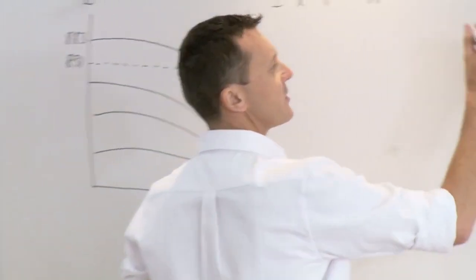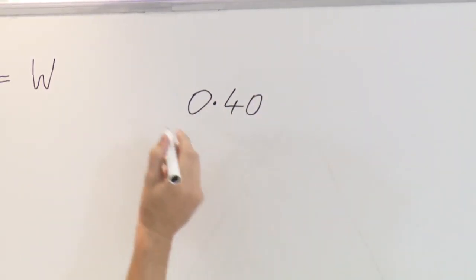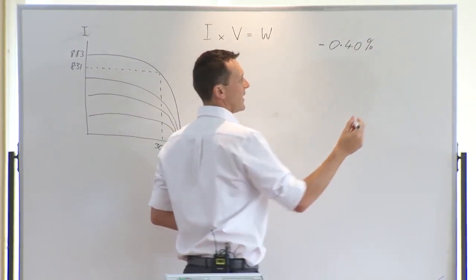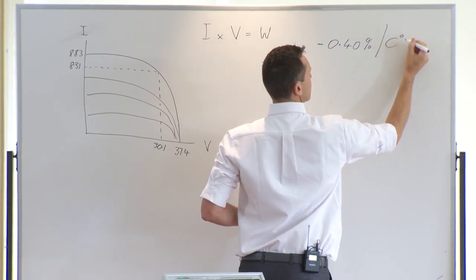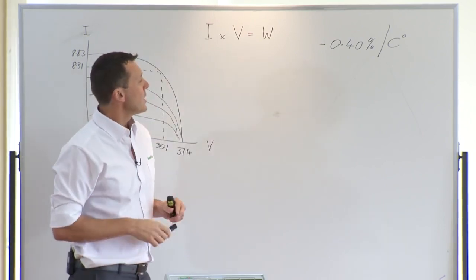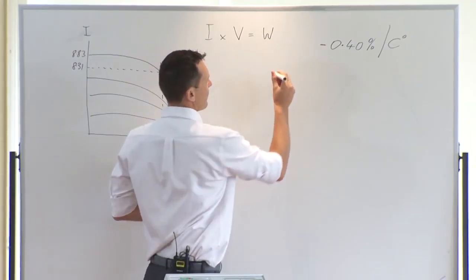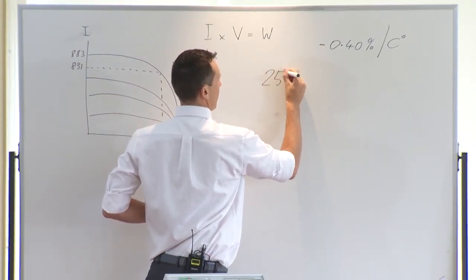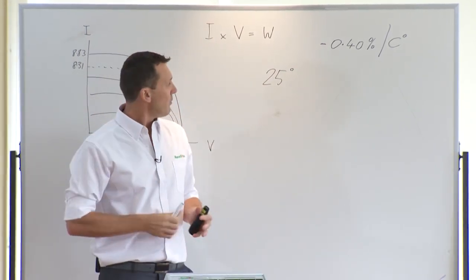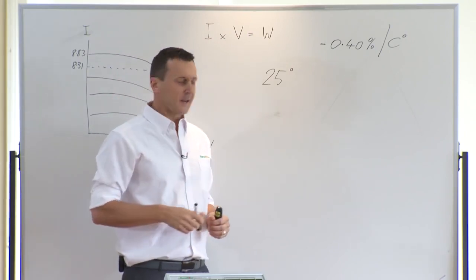So that temperature coefficient figure on our modules, 0.4, that's a negative figure, 0.4% per degree Celsius. That's what we're talking about with the coefficient. What that means is for every degree Celsius above 25 degrees, your system is going to, or that module, is going to lose 0.4 of a percent in output. So we'll just give you a working example of that.